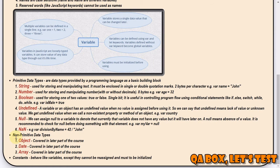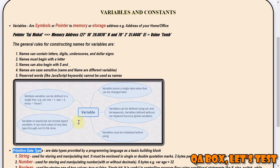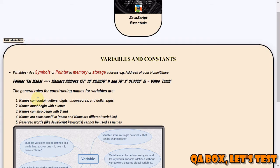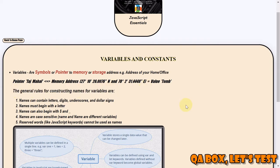We also have more types - non-primitive types. We will talk about what primitive means, but broadly these are the different data types available. Now there are certain rules we have to follow while creating a variable.